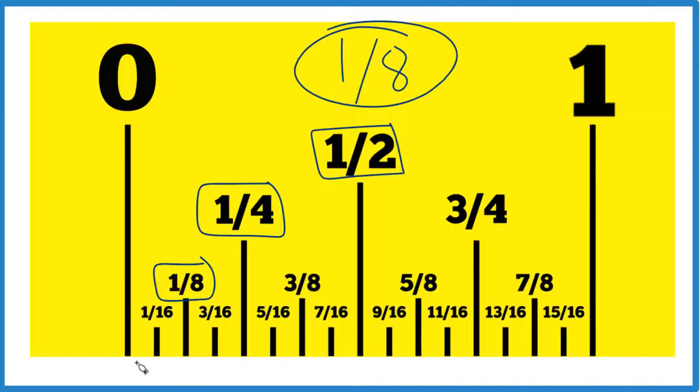So if you count it across, you'd have one eighth, two eighths which is one fourth, three eighths, four eighths which is just one half, five eighths, six eighths, seven eighths, and then eight over eight, which is just one.